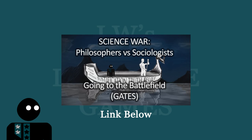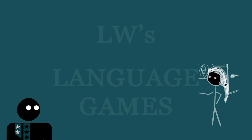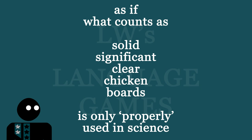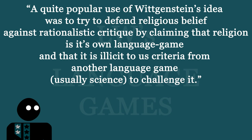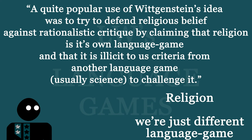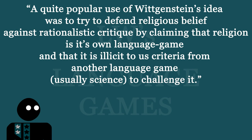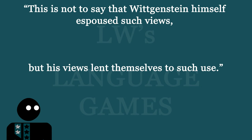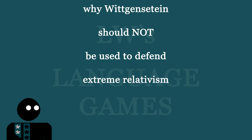It's clear here that Hafsa seems unreasonable for most of us — don't come into Darsh's world telling him he doesn't know what a solid block of wood is, as if physics alone defines the accurate use of that phrase. Because of this kind of thing, as O'Grady points out, a quite popular use of Wittgenstein's idea was to try to defend religious belief against rationalistic critique by claiming that religion is its own language game, and that it is illicit to use criteria from another language game — usually science — to challenge it. It's important to note, rightfully pointed out by O'Grady, that this is not to say Wittgenstein himself espoused such views, but his views lent themselves to such use.